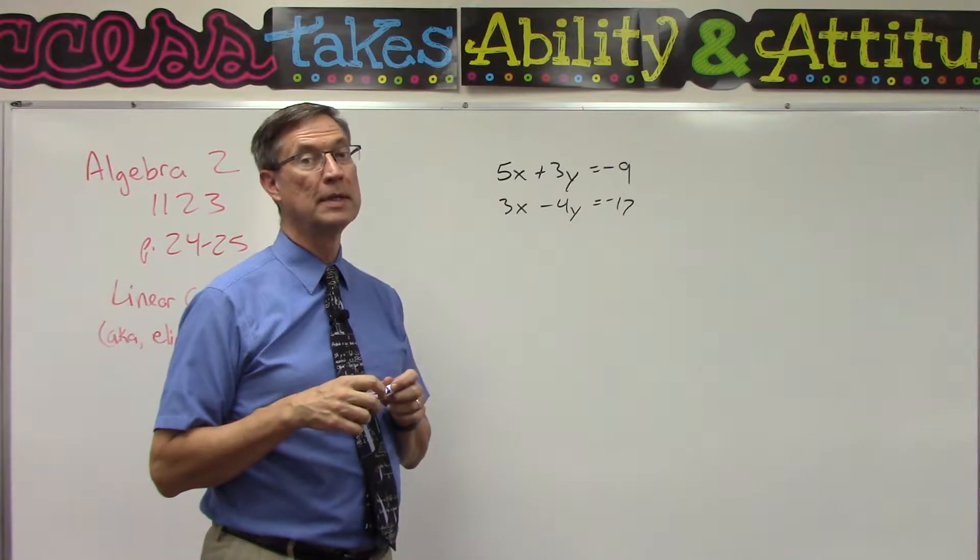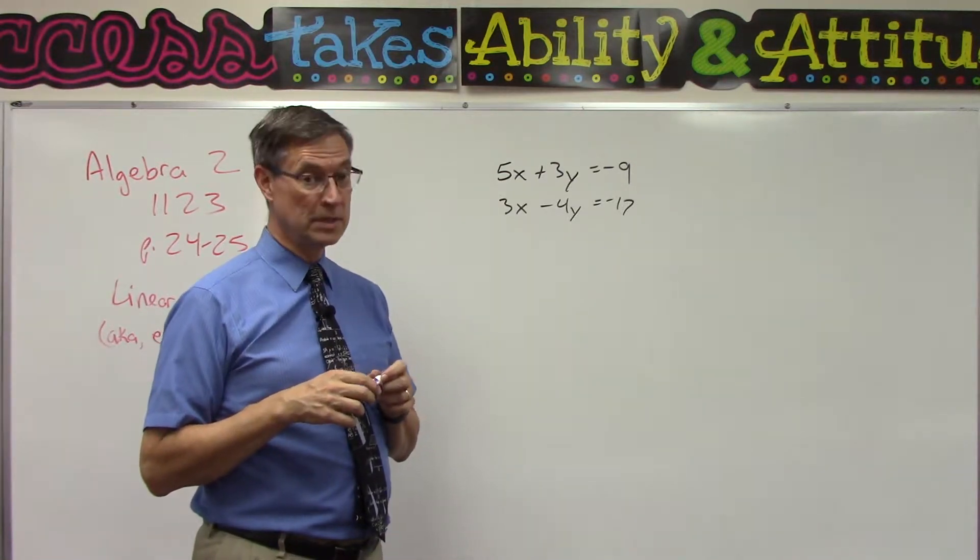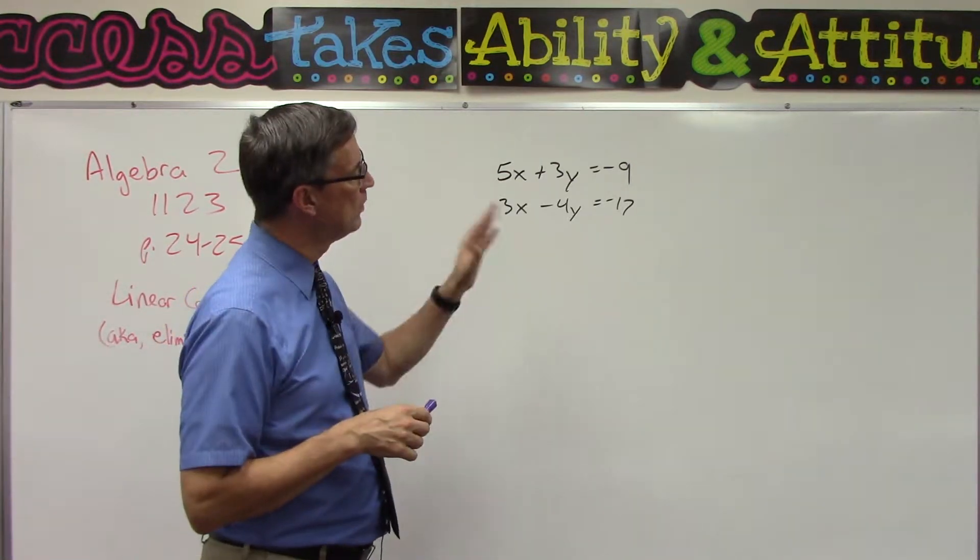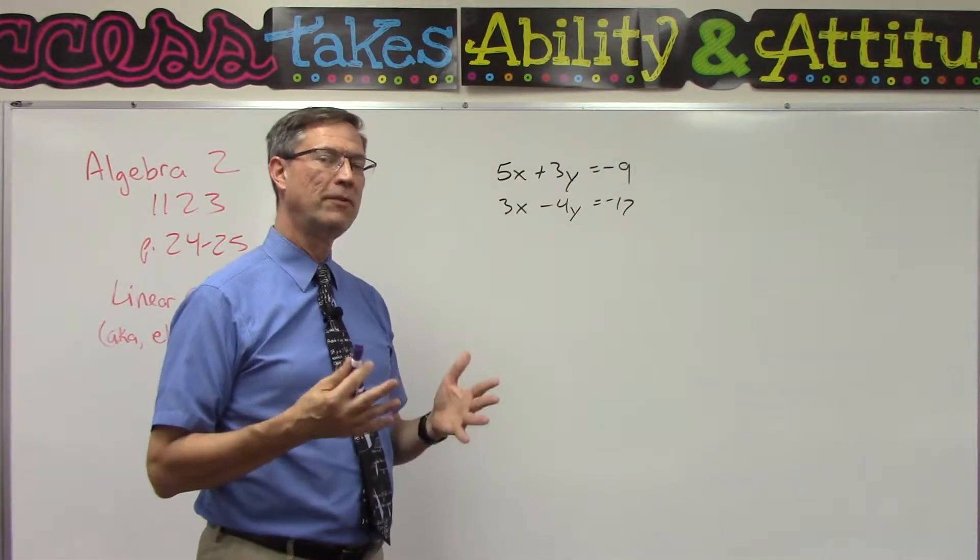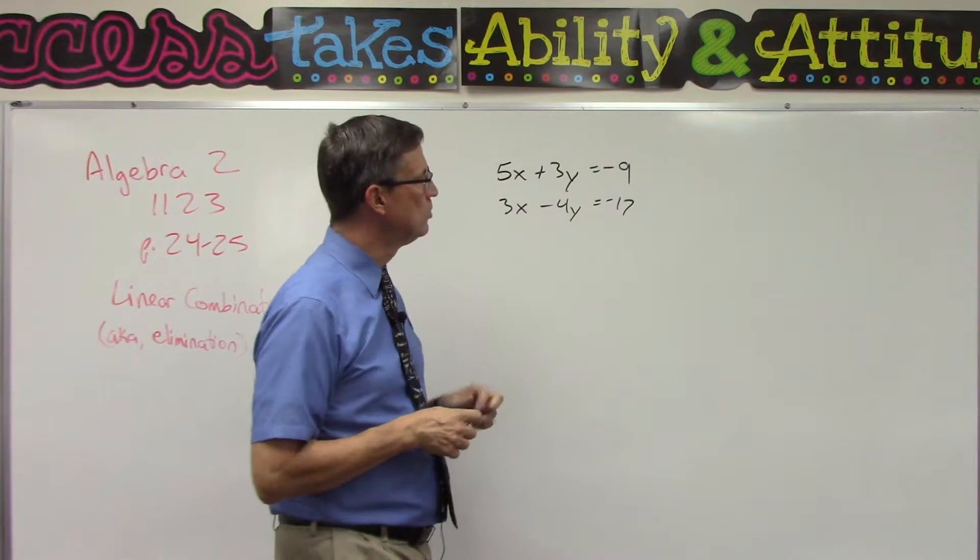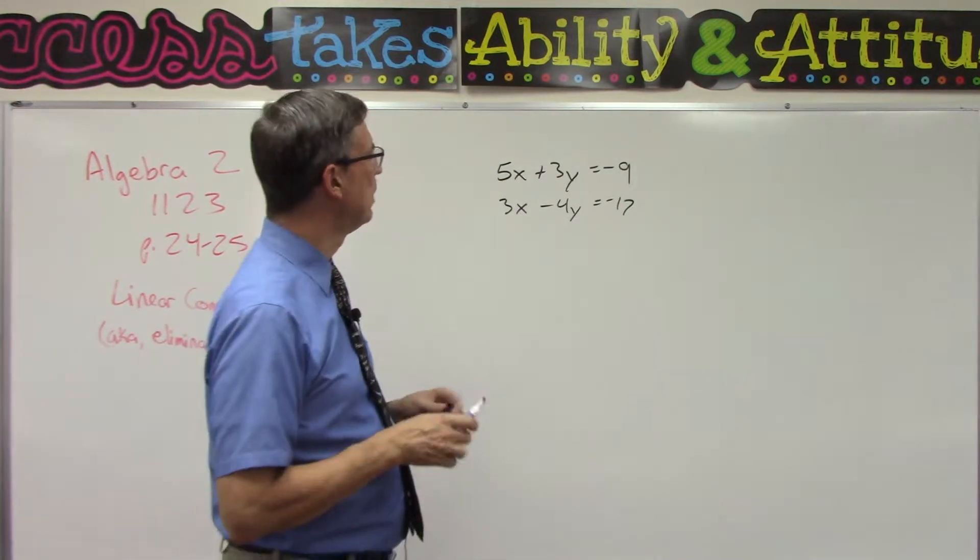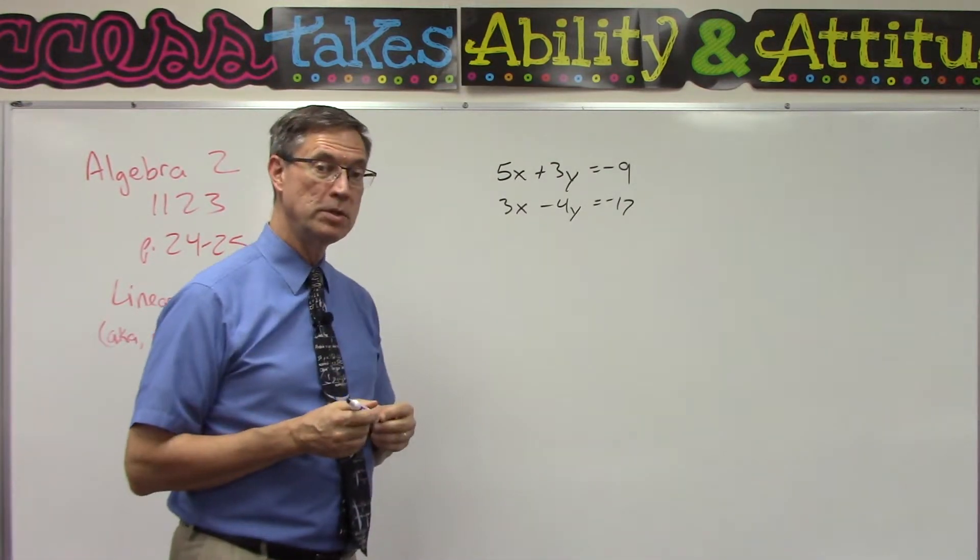In the previous lesson, we would have called that consistent lines. All of these on this page will be consistent, and you will be able to find an x and y value. The method we're going to use is multiplying one or both equations through by some number to get rid of a variable.